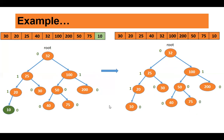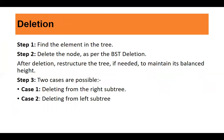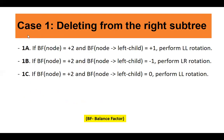Now along with insertion, we also need to look at deletion. In case of deletion, the concept is the same as in binary search tree. First, find the element to delete. Then delete the node as per BST deletion — three cases: deleting a leaf node, a node with one child, or a node with two children. After deletion, check the balance factor of each node and if required, restructure the tree. There are two cases: deleting from the right subtree and deleting from the left subtree.